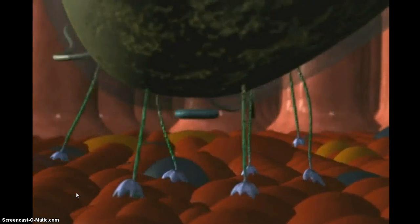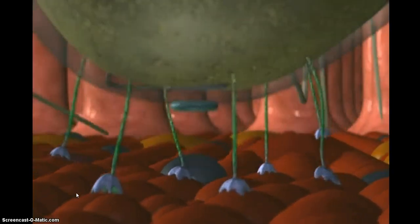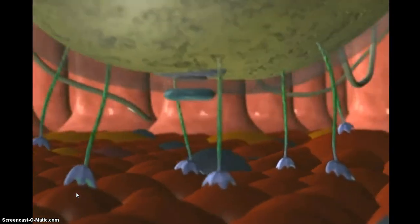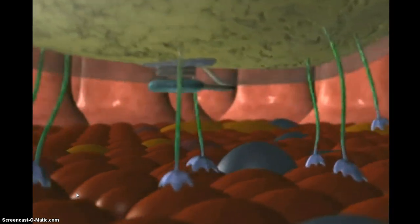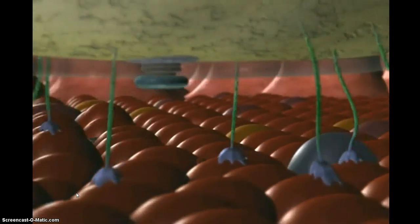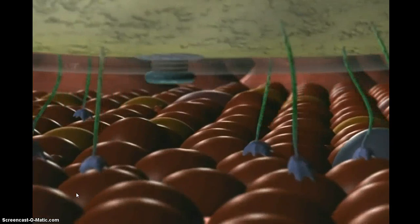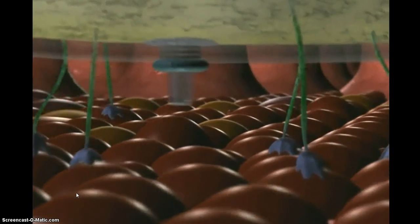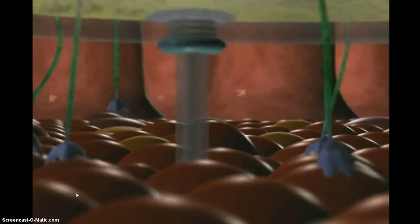The main relay point for macrophages traveling from the gut into the lymphatic system. S. typhi has a Vi capsular antigen. This helps it avoid neutrophil-based inflammation.